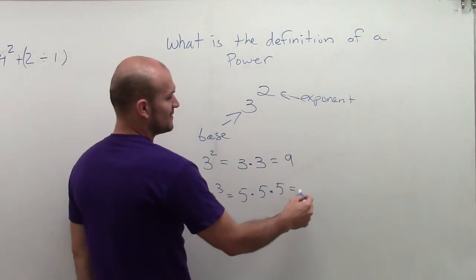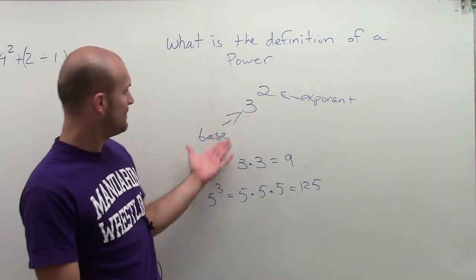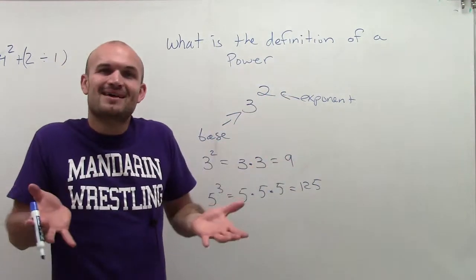5 times 5 times 5 equals 125. And that is your definition of a power, a base and an exponent married together.